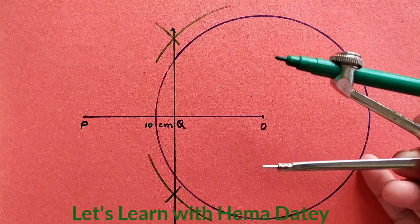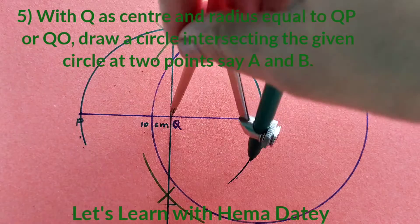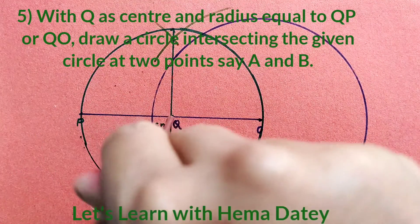So now with center Q we are drawing a circle which is intersecting the given circle at two points. Now the circle is constructed.